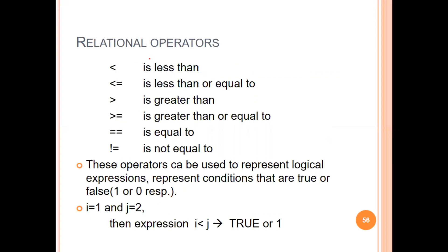Next are relational operators, also called comparison operators. These include: less than, less than or equal to, greater than, greater than or equal to, equal to, and not equal to. These represent conditions, and the result is either true (indicated by 1) or false (indicated by 0).